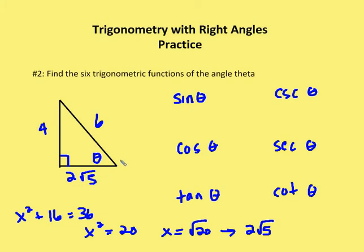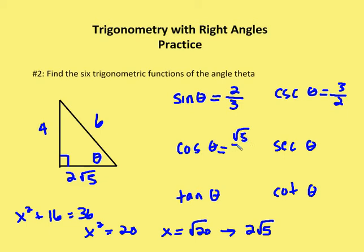I'll start with sine. Sine is the relationship of the opposite side over the hypotenuse, so sine is going to be 4 over 6, or 2 thirds. Cosecant is going to be the reciprocal of sine, so it's 3 over 2. Cosine is going to be the adjacent side, 2 root 5, over 6, which reduces to root 5 over 3.